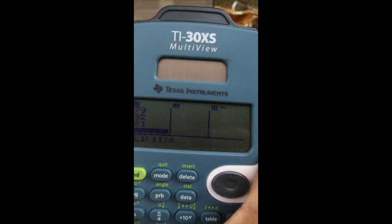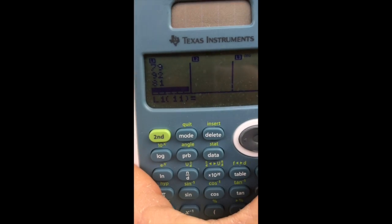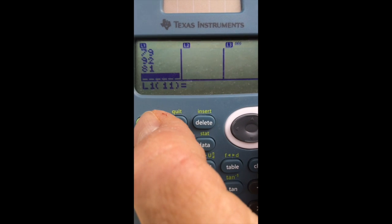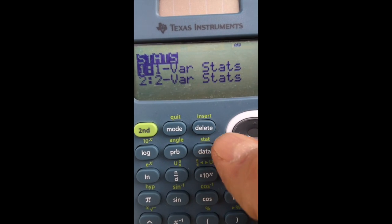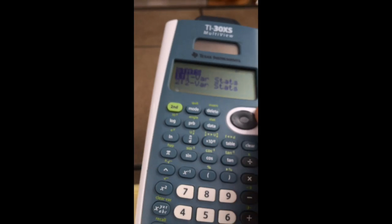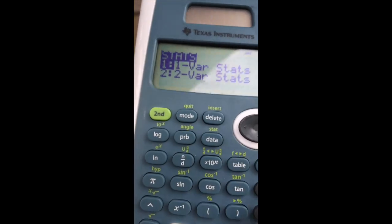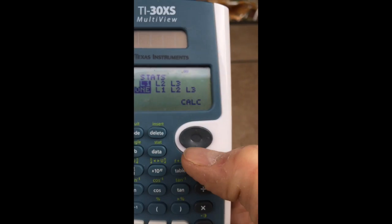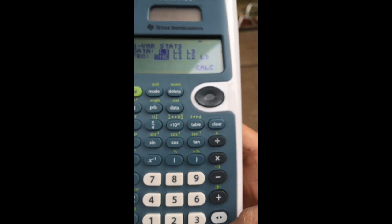I've entered my 10 numbers, because you see it's waiting to receive number 11. And now I'm going to go back, second, stat. I have one variable stat, and it's highlighted. So I will hit enter, and I'm going to hit my arrow key to calculate, and I will hit enter.